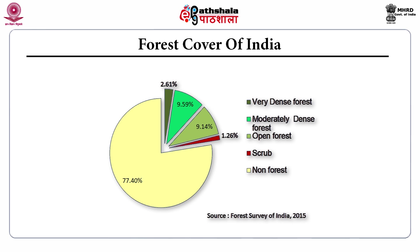The scrub forest where canopy cover is less than 10% were only 1.26%. The pie diagram of the forest cover of India shows very dense forests at 2.61%, moderately dense forests at 9.59%, open forests at 9.14%, and scrub at 1.26%.